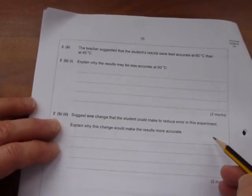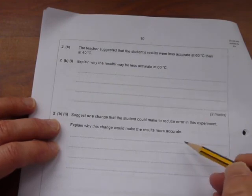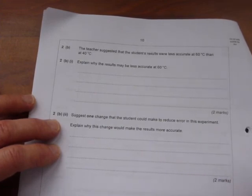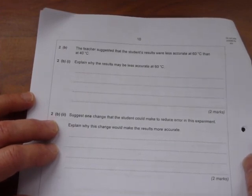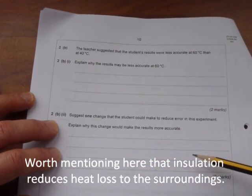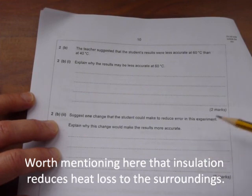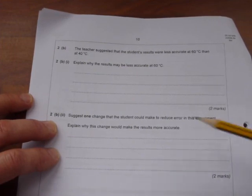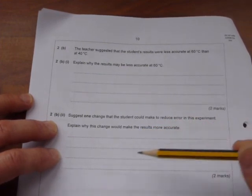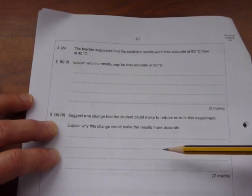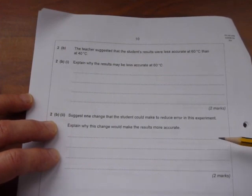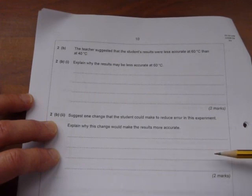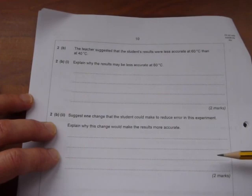It then says: suggest one change that the student could make to reduce error in this experiment. Explain why this change would make the results more accurate. One change the student could make: they could insulate the flask so it doesn't cool down. So one mark, insulate the flask. Second mark, the temperature would stay constant throughout the reaction or almost stay constant, so that would get you the second mark. There are other things you could do. You could repeat each reading and then take an average, calculate a mean from all the results, but you should also stress that you would omit any anomalous results. So for each temperature, perhaps do the experiment three times. If there are any anomalous results, you can omit them. By working out an average, you reduce the random error in your experiment.